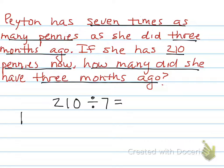What's our basic fact? I see 21 divided by seven. I think to myself, seven times what gives me 21? Three.